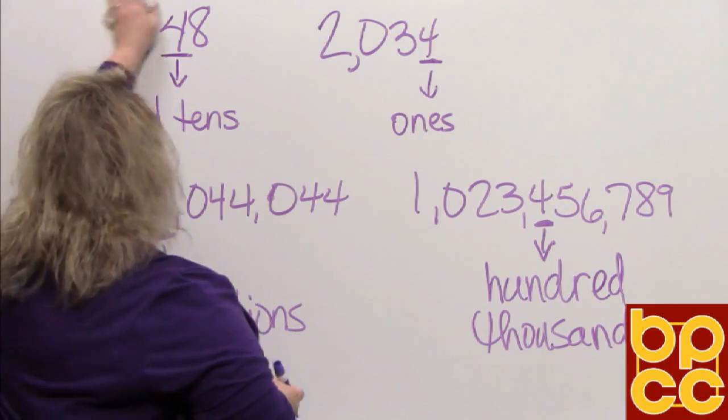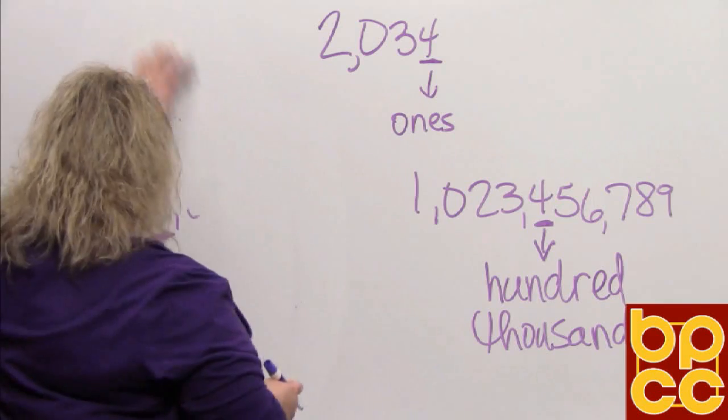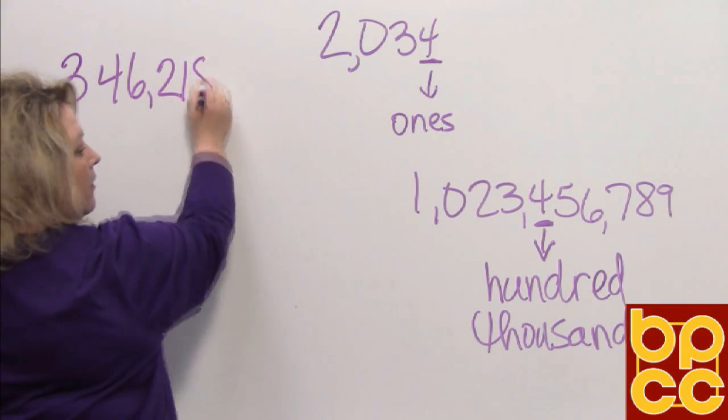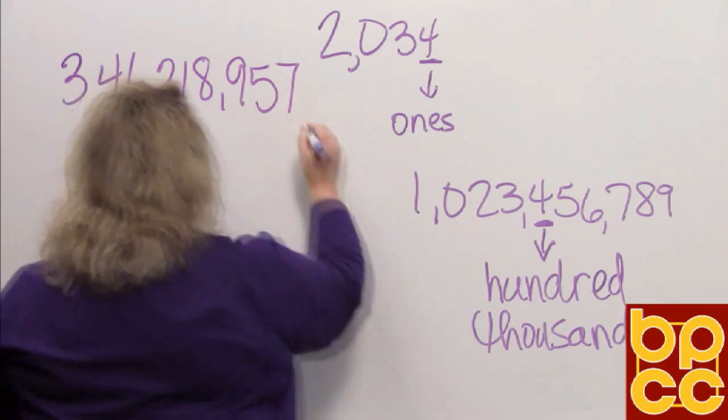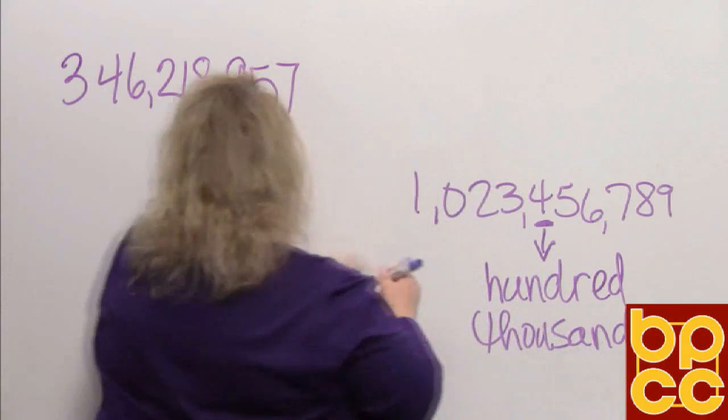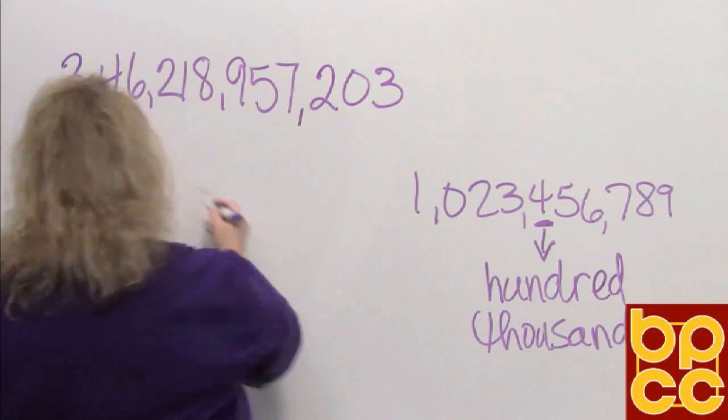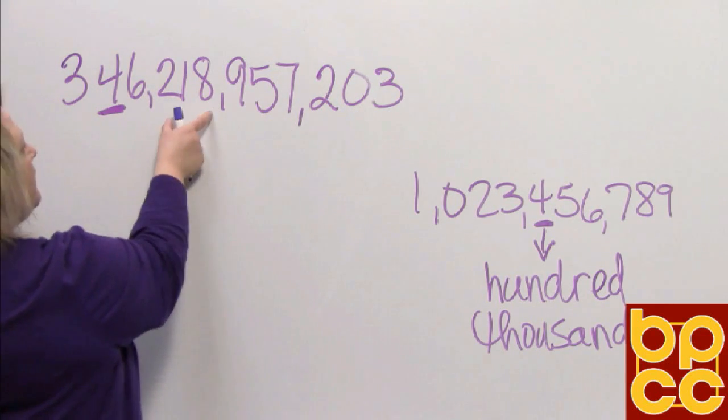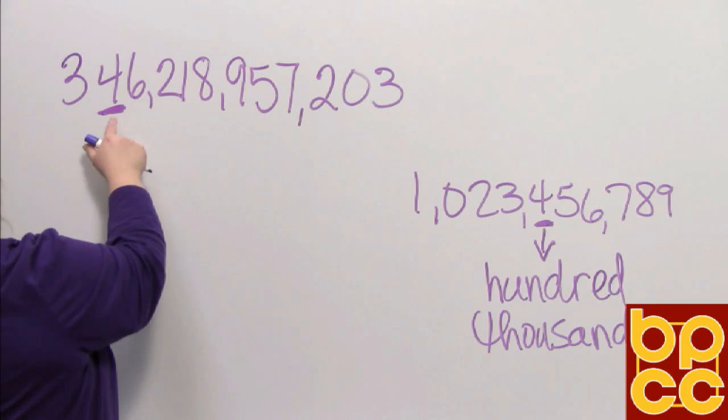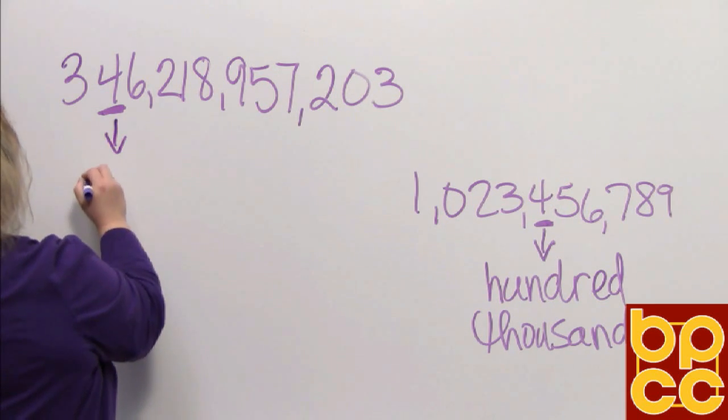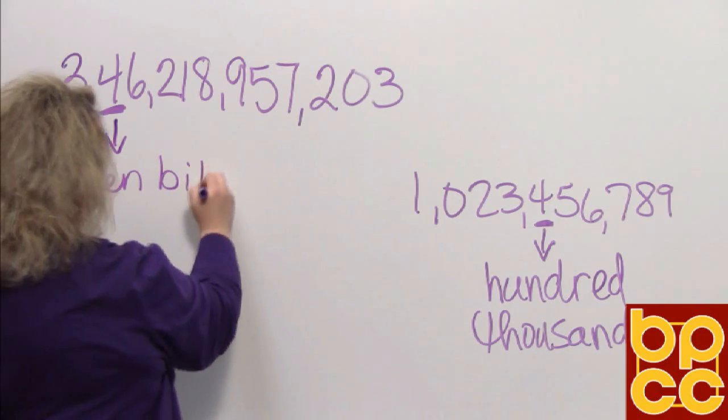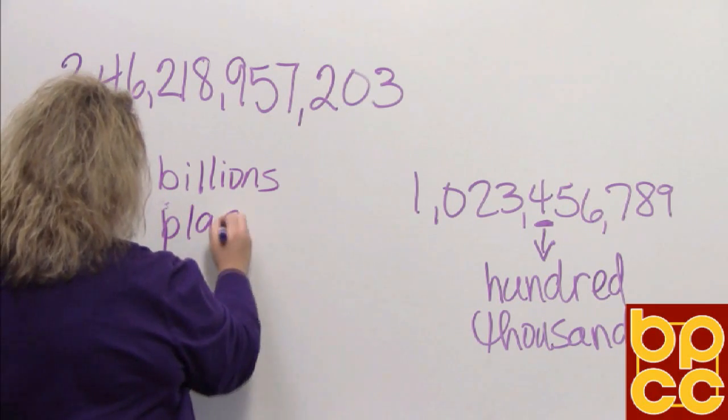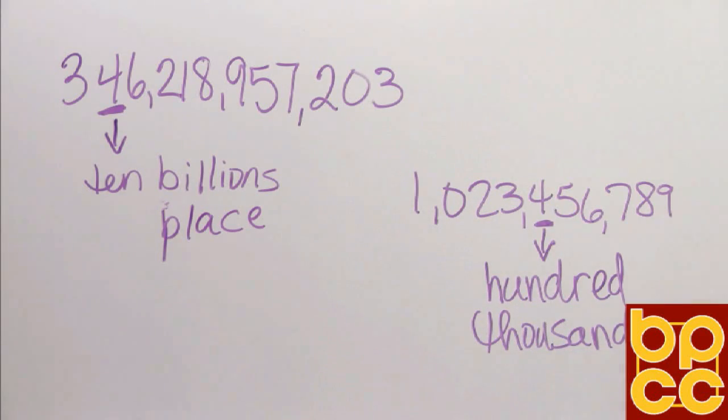And our last number, this four is in the, here is the ones period. Here is thousands. This is millions. And so next would be what? Billions. So this is 10 billion place. Okay.